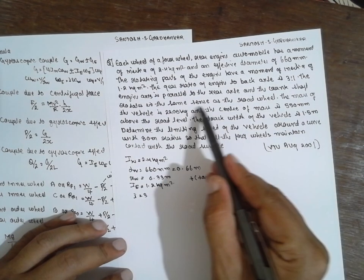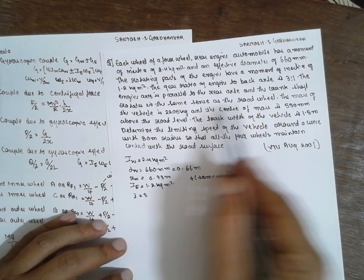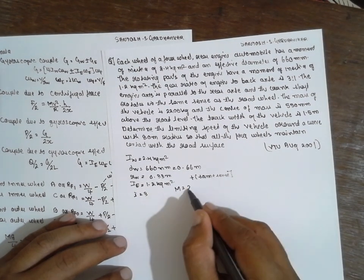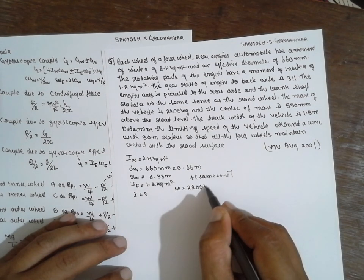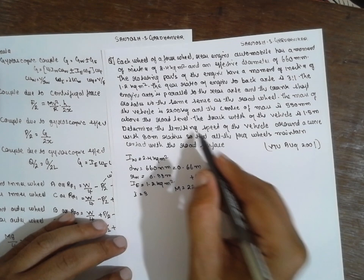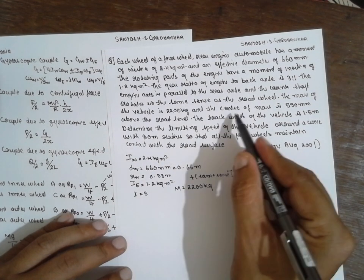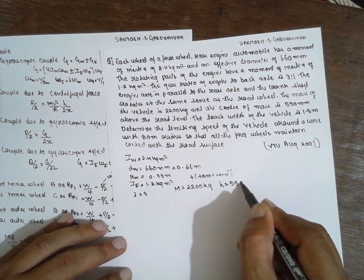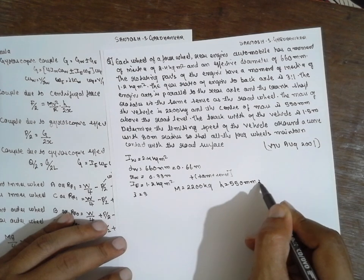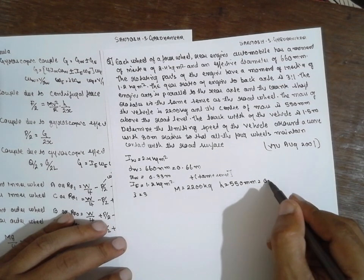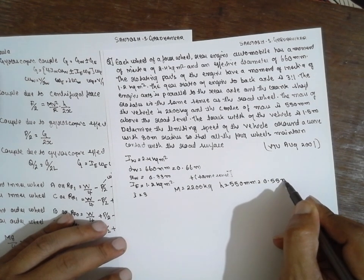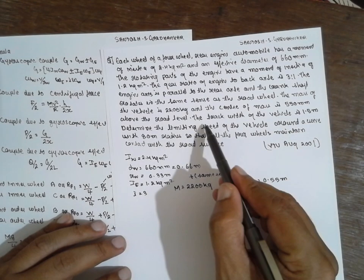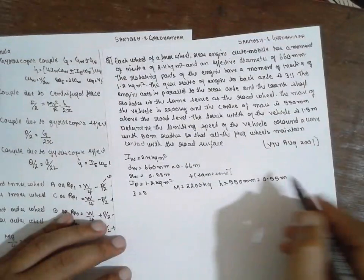The mass of the vehicle m is equal to 2200 kg. The center of mass height above the road h is equal to 550 mm — you have to convert into meters, giving h equal to 0.55 m. The track width x is equal to 1.5 m.